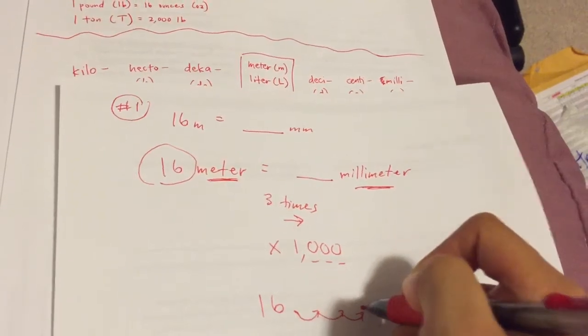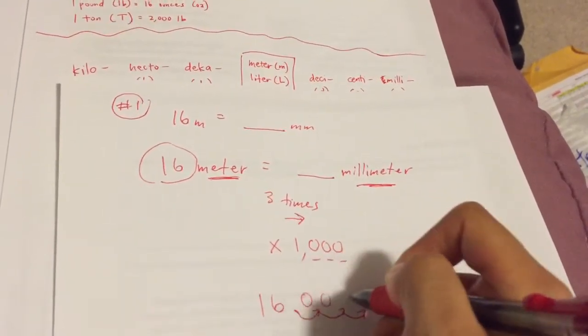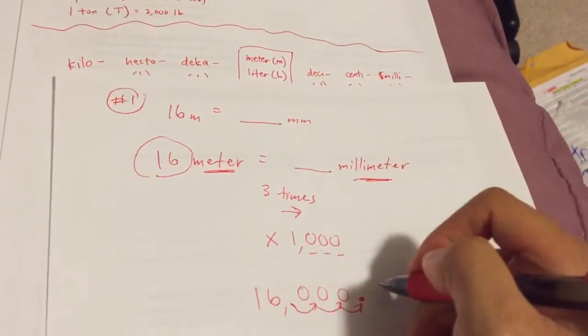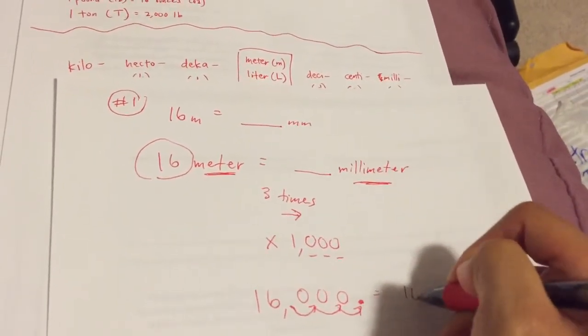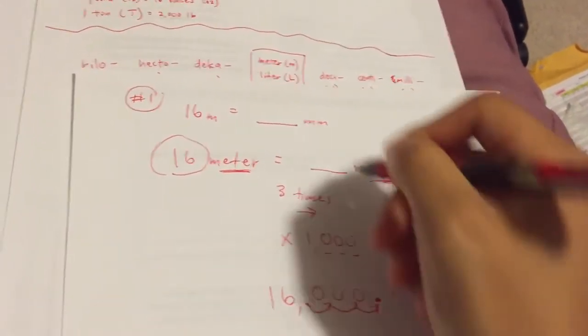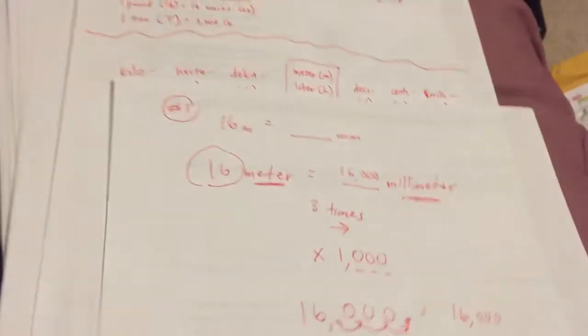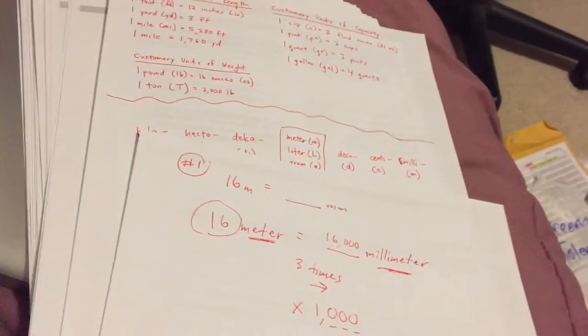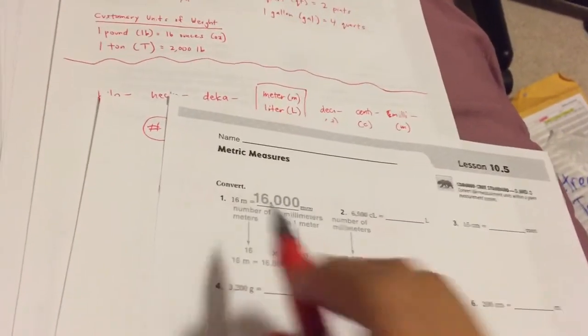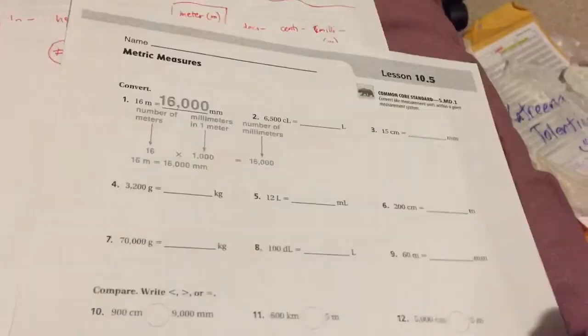The decimal is now here, and you're going to add zeros. So our final answer is 16,000. Now let's do that again and break it down one more time.